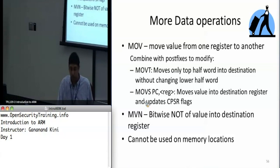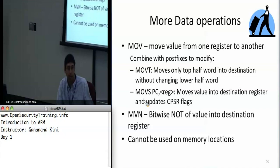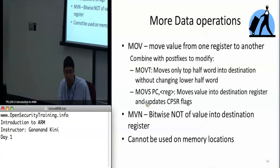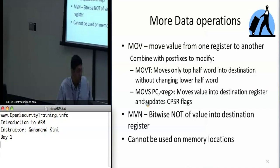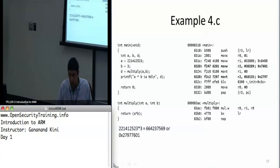We'll cover that in more detail later. Finally, we have MVN, which is move negative. It takes the ones complement of the value in the register and puts it into the destination register. These instructions cannot be used on memory and are only applicable to registers — getting back to that load-store feature of ARM.